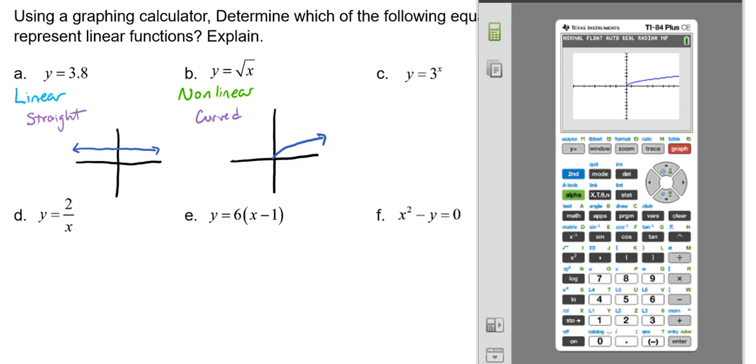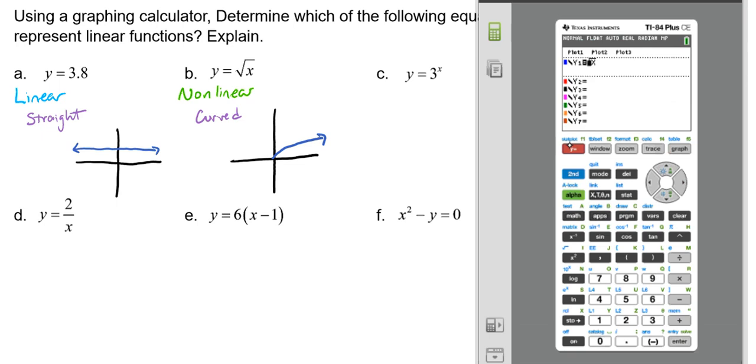Let's go ahead and look at the graph for letter C. So we go y equals, and we're going to go 3. And then to get the x in the exponent, we're going to hit this little caret button. It looks like a little arrow pointing up, so we're going to hit that. And then the x, and then we're going to hit graph. And that definitely has a curve, so that is definitely going to be nonlinear.